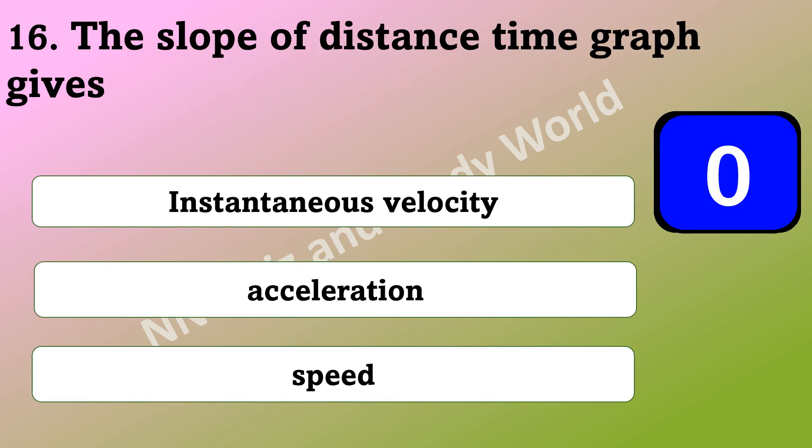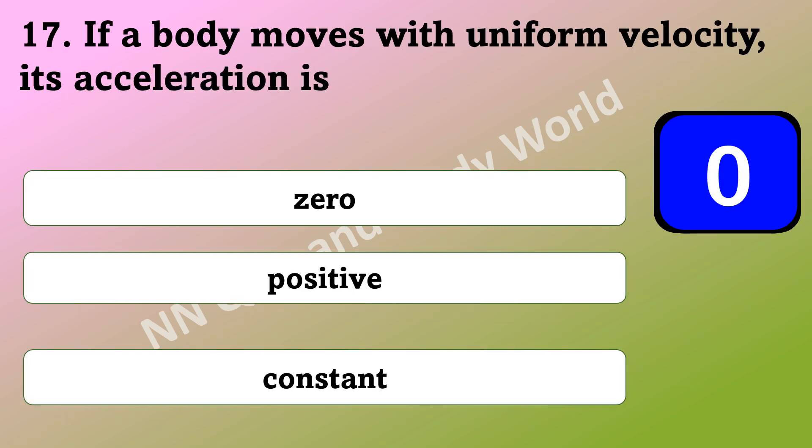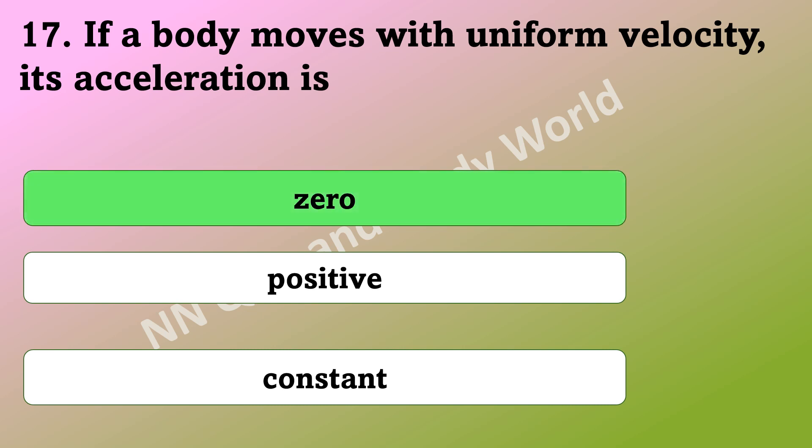What does the slope of the distance time graph indicate? Is it instantaneous velocity, acceleration, or speed? The answer is speed. What is the acceleration of a body if it moves with uniform velocity? Is it zero, positive, or constant? The answer is zero.